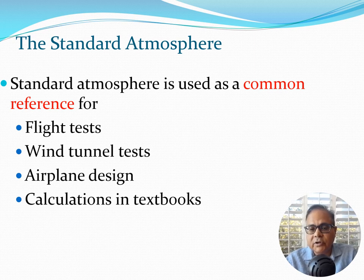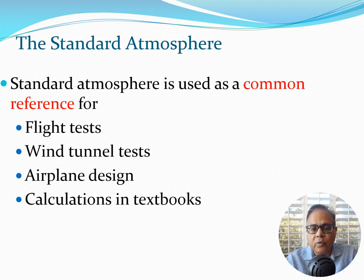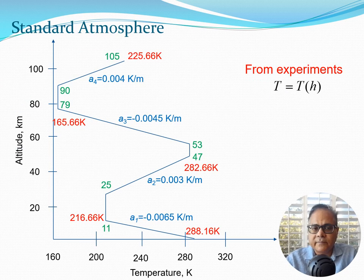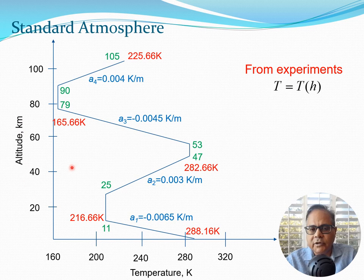Essentially, when you are specified a certain height, you want to know at that height the temperature, the density, and the pressure of the air. As you know, as you go up any mountain the temperature decreases, and that's one of the things being captured by the standard atmosphere graph. Here I have drawn the standard atmosphere: on the x-axis you have the temperature in Kelvin, and on the y-axis you have the altitude in kilometers, where the altitude is h. Temperature is a function of h.